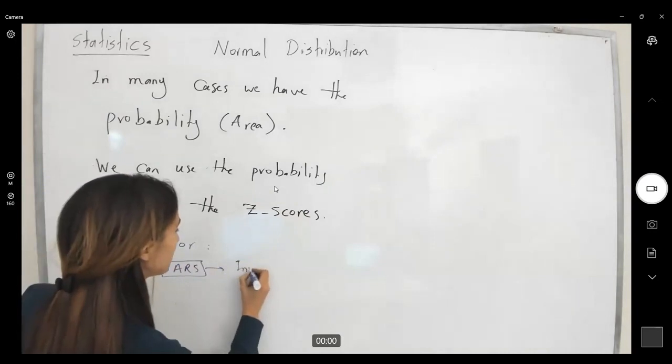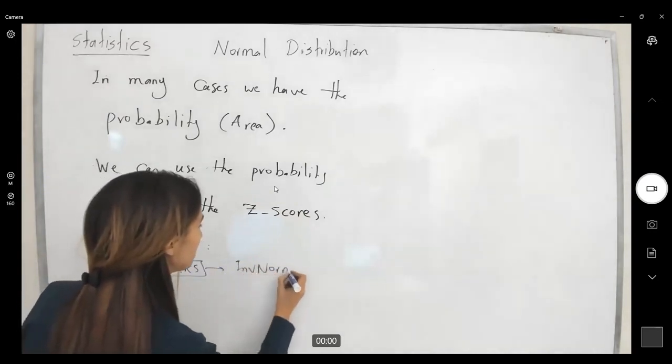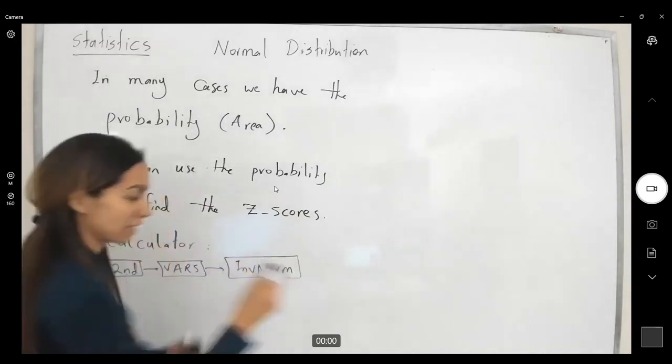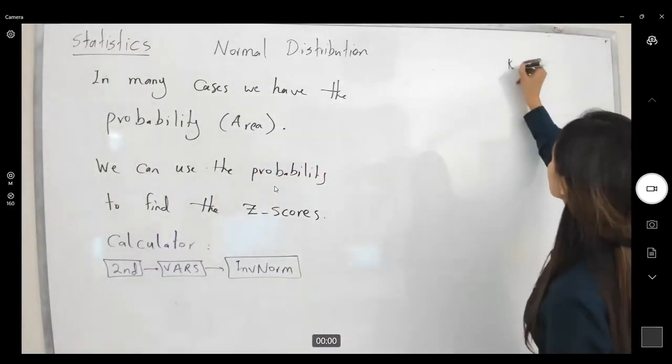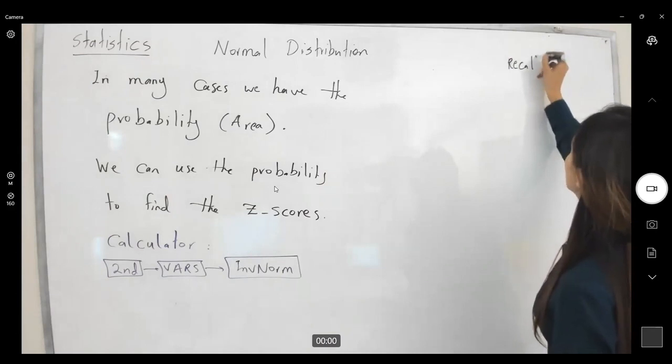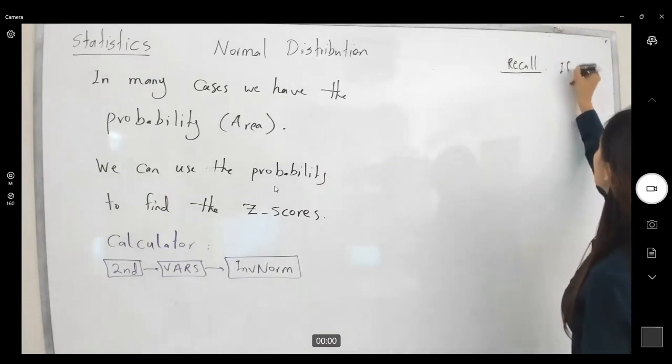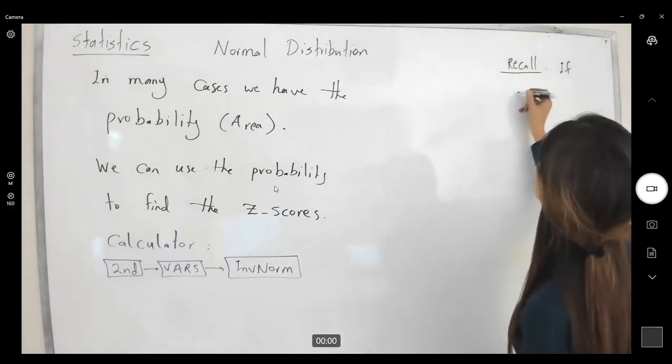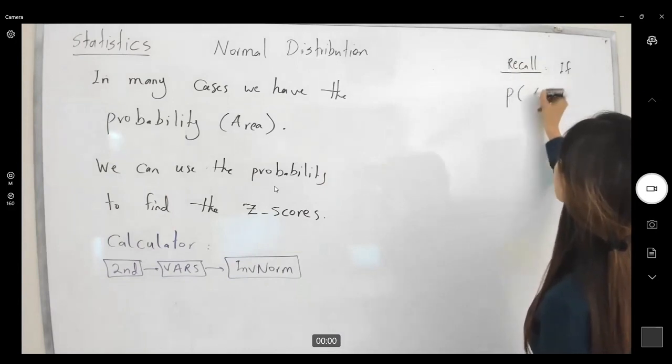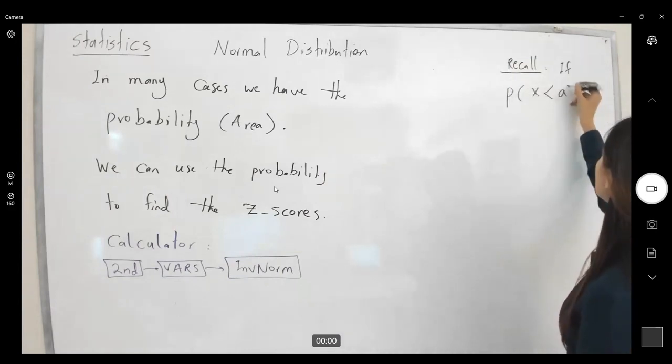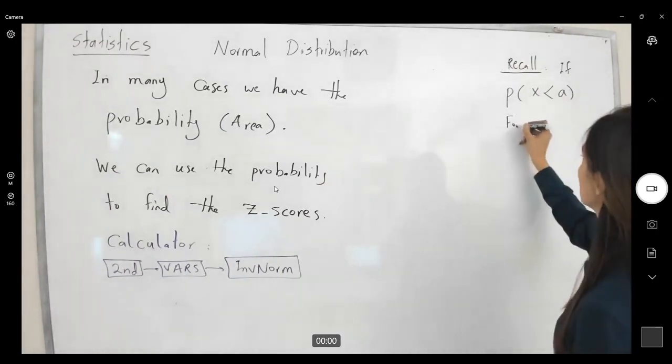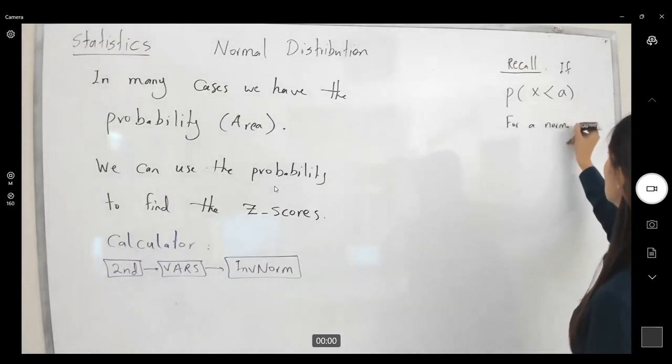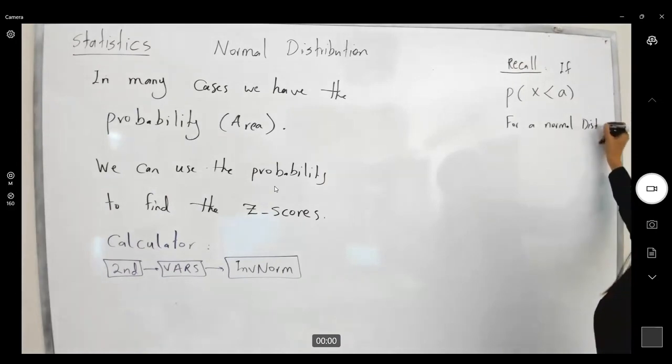Inverse norm. So again, a quick recall for you. If you're finding the probability that X is less than A and you have a normal distribution,